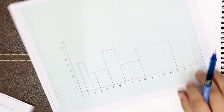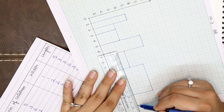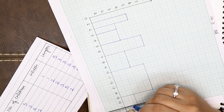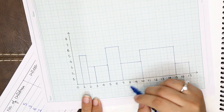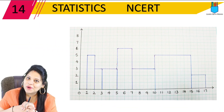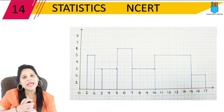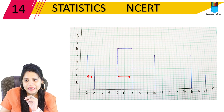Last is 15 to 17. The width is 2 and the length is also 2. Here is 15 and here is 17 on the x-axis. So we draw the final bar from 15 to 17 with height 2. We have the complete histogram. The bars have different widths because the class intervals have different gaps.